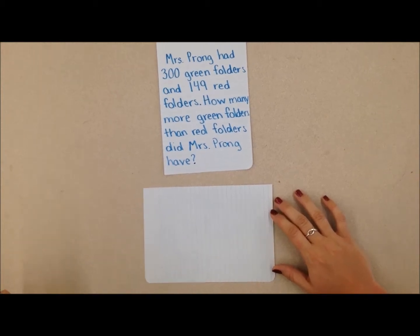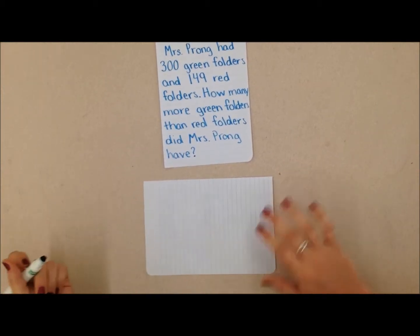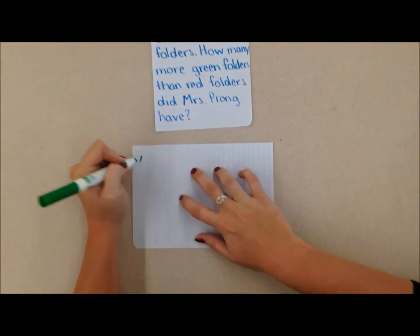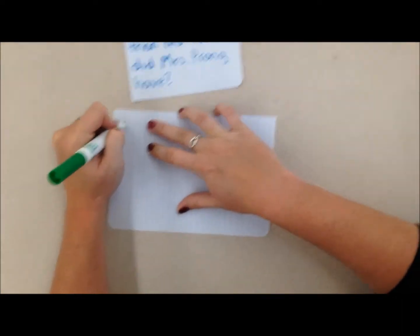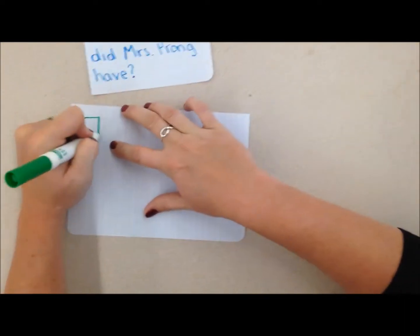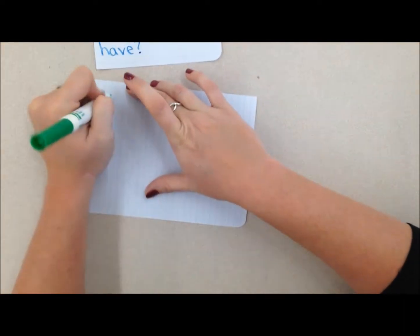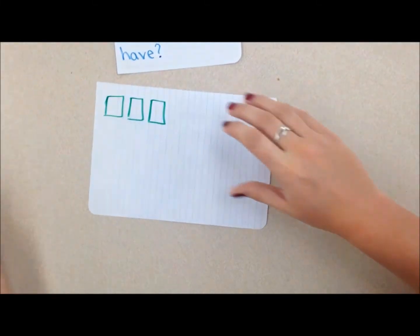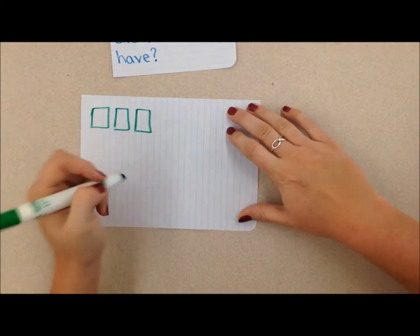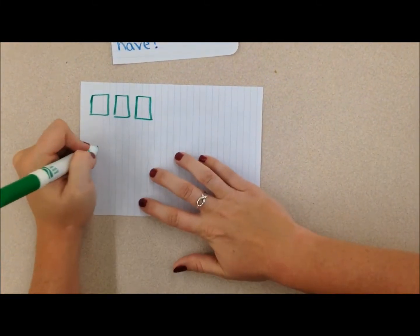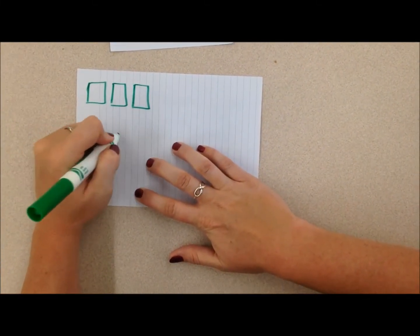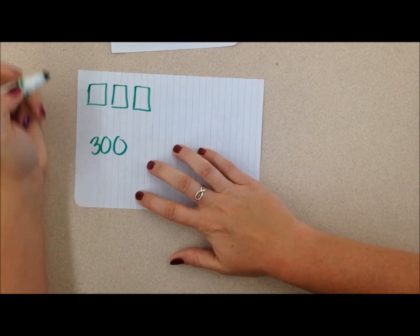Okay, so I'm going to use a quick picture to help me. She has 300 green folders — that's 100, 200, 300 green folders. I'm going to record that here: 300 green folders.